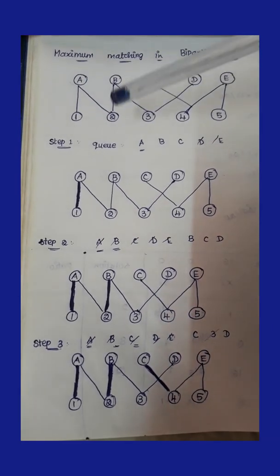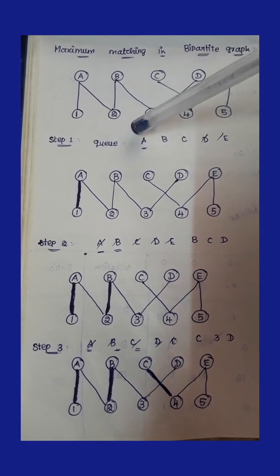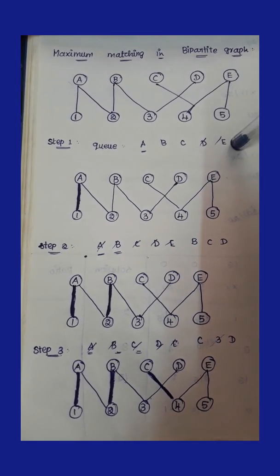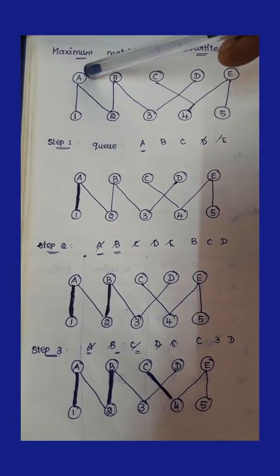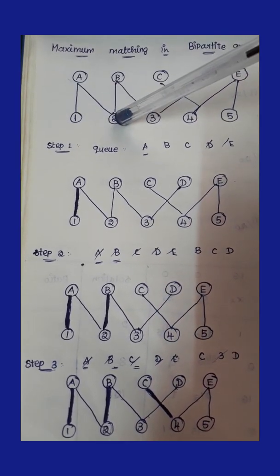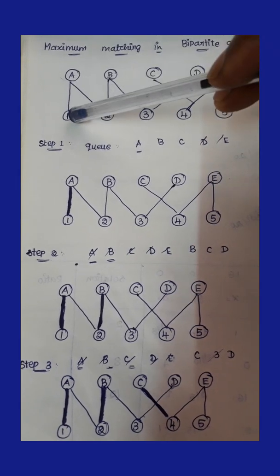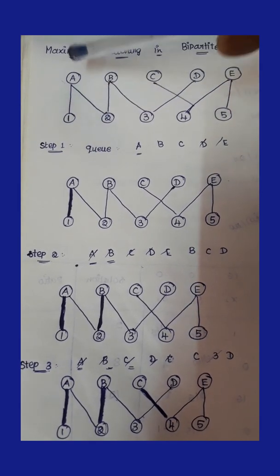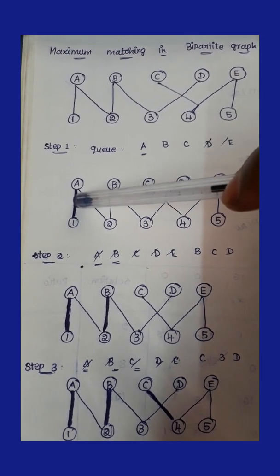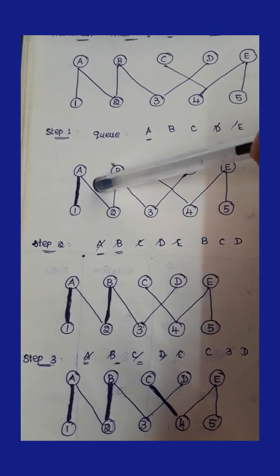We start by storing all available alphabet vertices in the queue. The vertices given are from A to E. First, A is entered into the queue. We check the connectivity of A — A is connected with 1 and A is connected with 2. We check whether 1 is connected with any other vertices. Since 1 is only connected with A, they form a perfect pair, marked with a shaded line. Once a pair is assigned for 1 and A, any other connectivity from them is ignored.